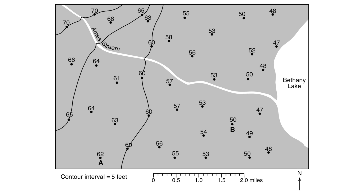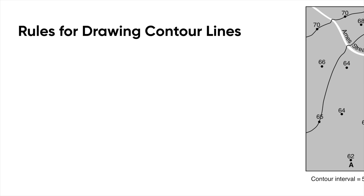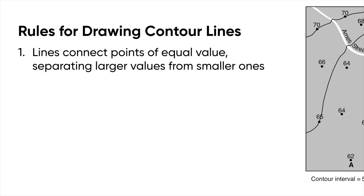When we draw contour lines, we have a few rules to follow, and they're pretty simple. Rule number one is that the lines are going to connect points of equal value — meaning all of the 50s are going to connect to each other, the 55s, etc. They connect points that have the same elevations. Most importantly, these lines are going to separate the higher elevations from the lower elevations.